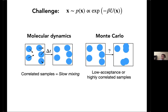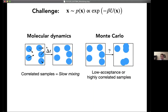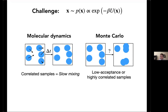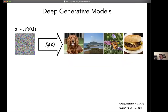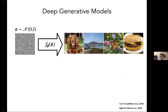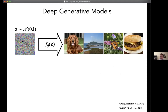We have two general methods: molecular dynamics, with highly correlated samples due to a very small integration timestep, or Monte Carlo, with either low acceptance or highly correlated samples from extremely small moves. In AI there has been a revolution in generative modeling where we map a latent space variable — for instance, a high-dimensional Gaussian distribution — through a neural network into highly structured images such as photos of a dog, butterfly, or hamburger.